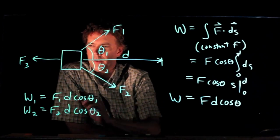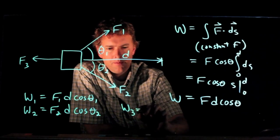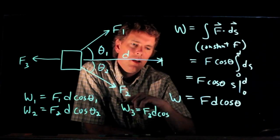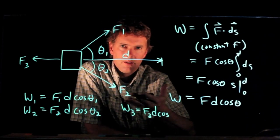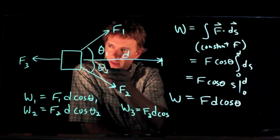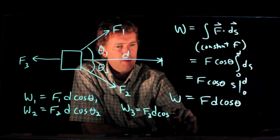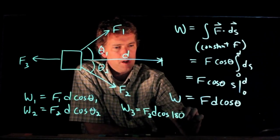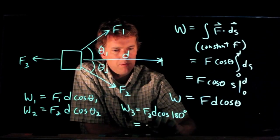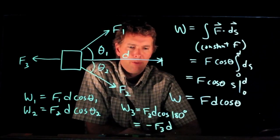What about the work due to F3? Work due to F3 is F3d cosine of something. Cosine of the angle between the displacement and the force. The displacement is to the right, the force is to the left, and therefore that angle is 180 degrees. Cosine of 180 degrees is minus one. And so we just end up with minus F3d.